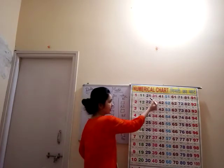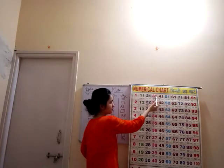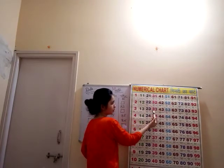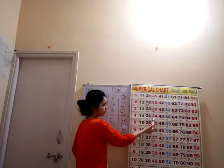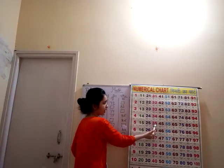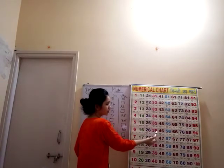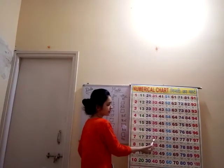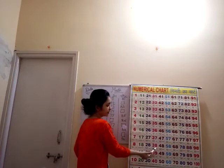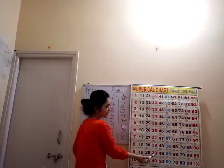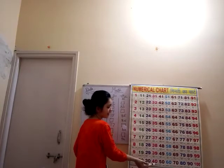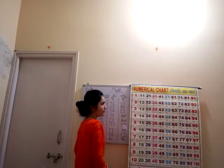30 ke bad? 3, 1, 31. 3, 2, 32. 3, 3, 33. 3, 4, 34. 3, 5, 35. 3, 6, 36. 3, 7, 37. 3, 8, 38. 3, 9, 39. 39 ke bad? 4, 0, 40.